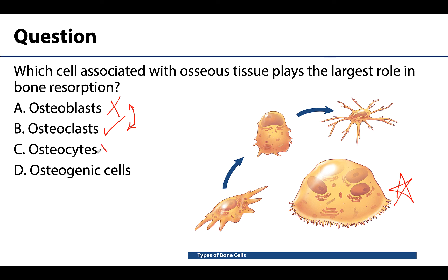Osteocytes are not correct either, because these are the mature bone cells that play a role in bone maintenance, not breakdown. And osteogenic cells are not correct — these are the beginning of the cell life cycle and are important in terms of cell division. Please make sure you have these concepts down before moving on to other areas in this session, as the concepts here really help make sense of ones we will discuss in subsequent videos. Please always feel free to reach out with any questions, and have a great day!